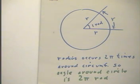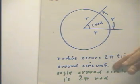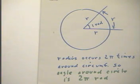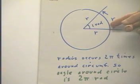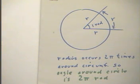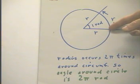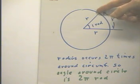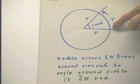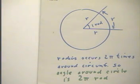Now we observe that since the radius occurs 2π times as you go around the circumference all the way around the circle, the angle around the circle had better be 2π radians. Since we have the circumference, we have the radius 2π times. That is, we're going to be able to do this once, twice, three, four, five, six times and a little bit left over. Remember, 2π is about 6.28.